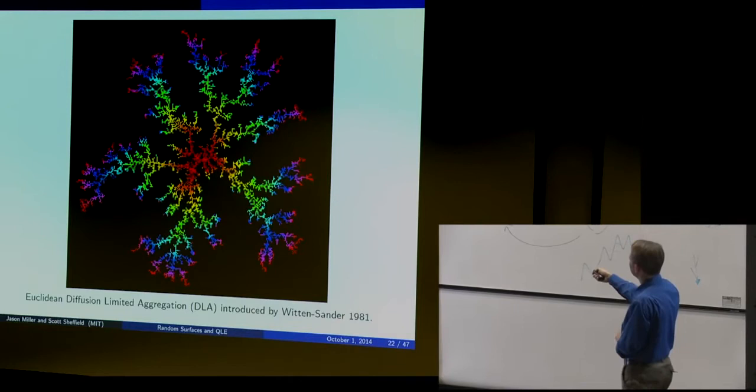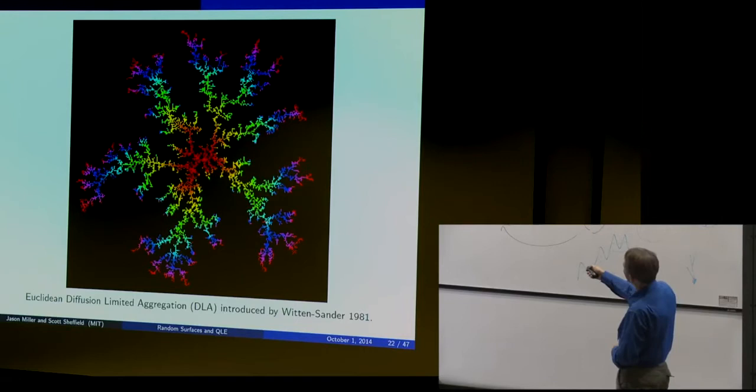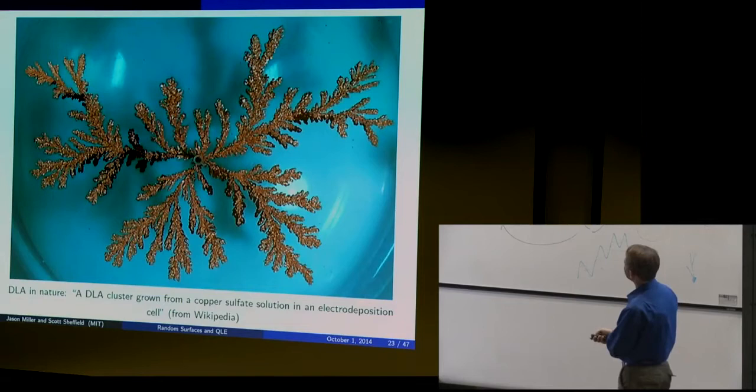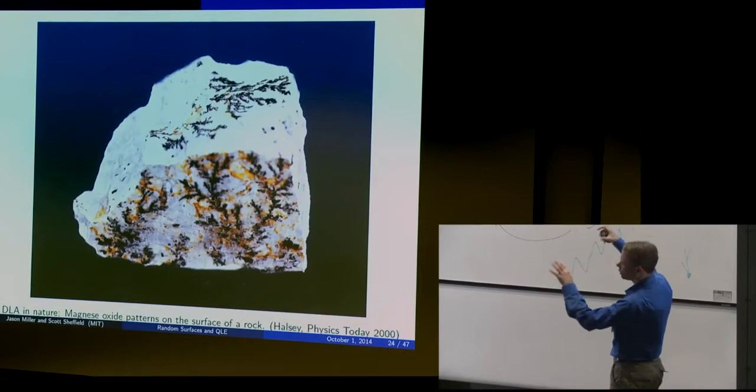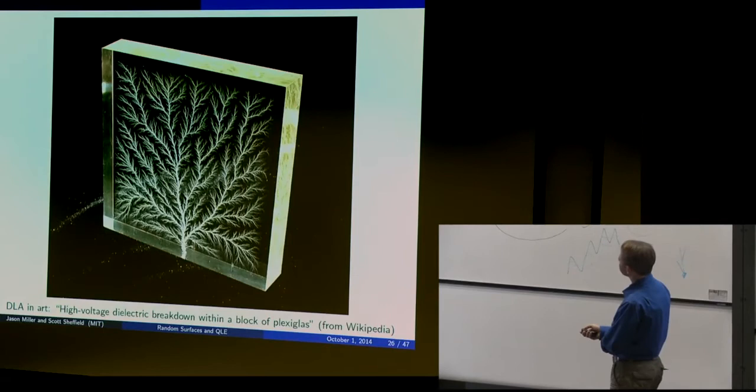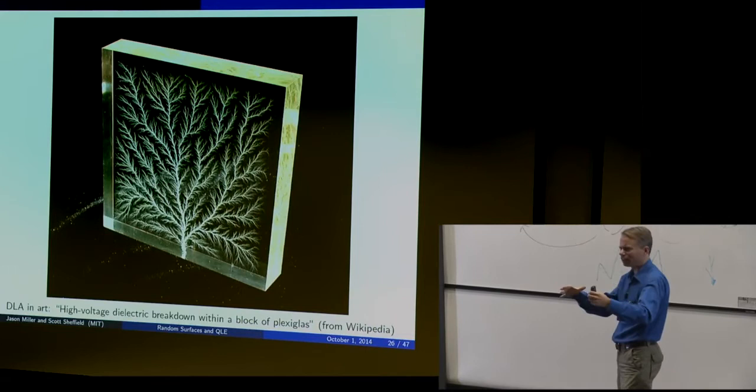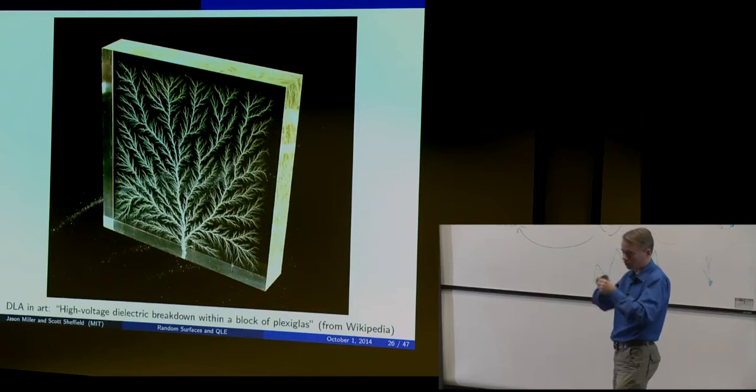This is in nature — copper sulfate solution shows DLA patterns. Here's two-dimensional DLA. This is a pattern on magnesium oxide. This is what they call a frozen lightning bolt: you take a piece of plexiglass, run a huge amount of voltage through it — literally like a lightning bolt — and the effect of the lightning burns these DLA-like patterns into the glass. Even after you turn off the electricity, this is what you have left. You can actually buy these online.